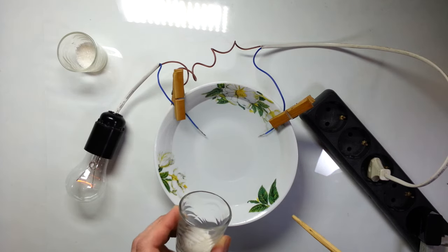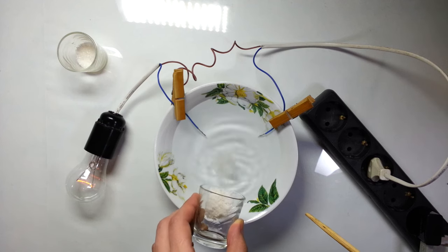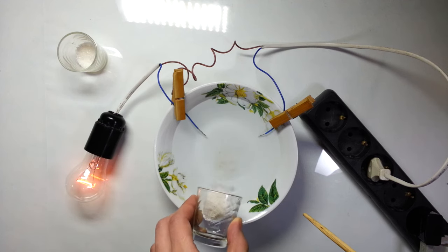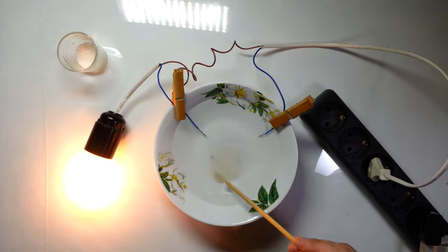Now let's add some salt to the water, and let's see how the conductivity of the water changes. As you can see, the more salt dissolves in the water, the better water starts to conduct electricity.